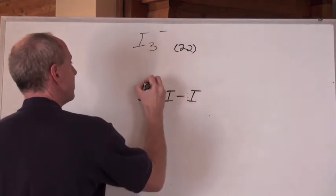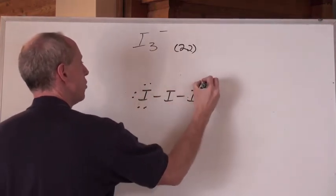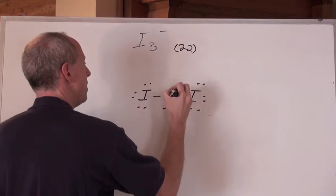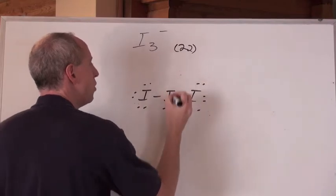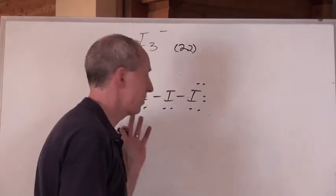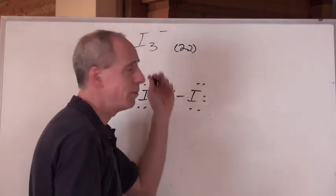2, 4, 6, 8, 10, 12, 14, 16, 18. If we just put two dots there, that's 20, and everybody's got an octet and is happy, but we need to put in 22.